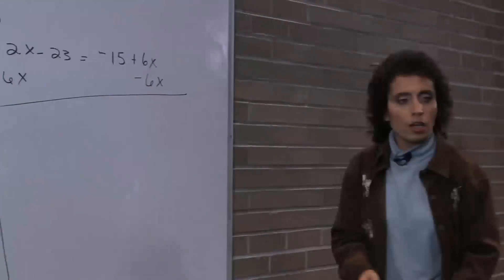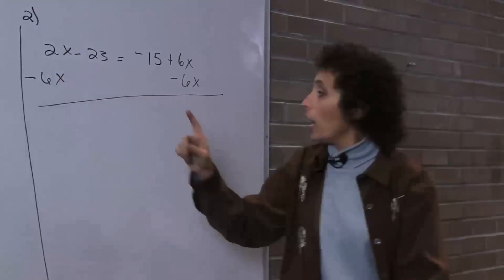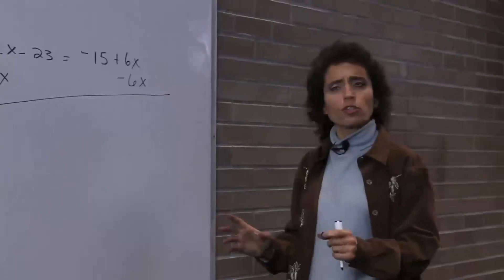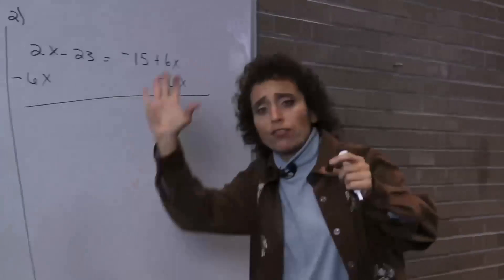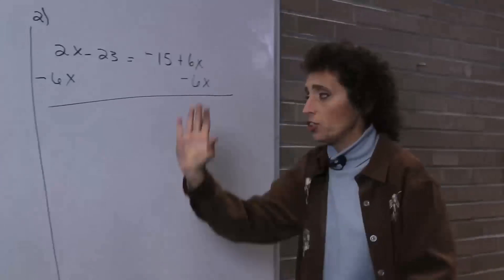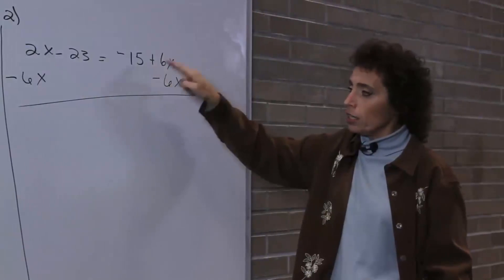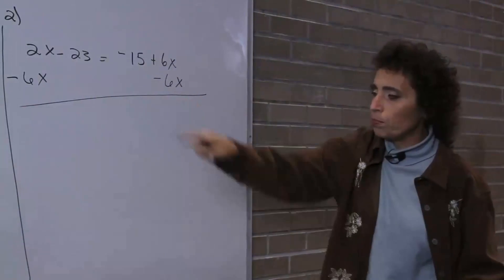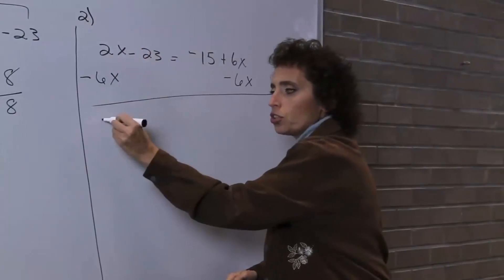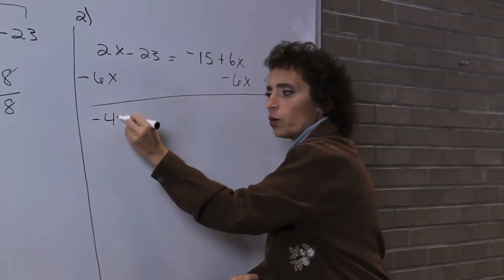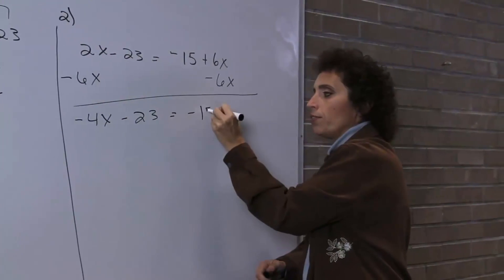I'm going to subtract 6x and bring it to the left. I can do this because to move left to right I use either addition or subtraction based on what's already been done. That's a plus, so I need to subtract on both sides to keep it in balance. So I have 2x, I owe you 6x, so I owe you 4x, minus 23, equals negative 15.